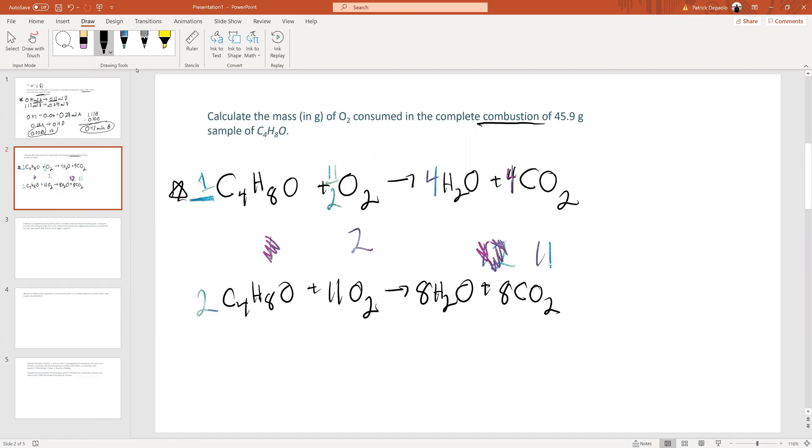Now that we have our balanced equation, we want to see how much O2 is consumed if we combust 45.9 grams of C4H8O. If you're thinking find the moles, that's exactly right. We want to take 45.9 and divide it by the molar mass of C4H8O, which is 72, meaning 4 times 12 for the carbons plus 8 for the hydrogens plus 16 for oxygen. So you'd have 45.9 divided by 72 equals 0.6375 moles.